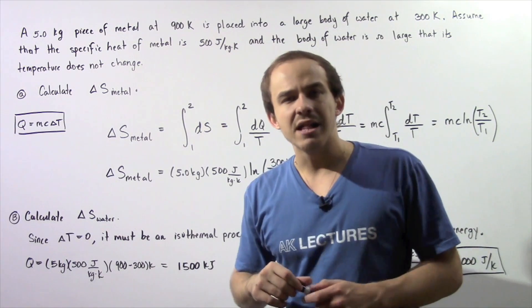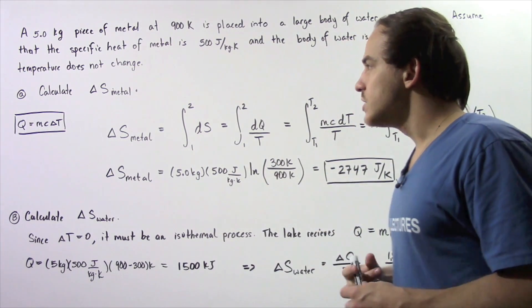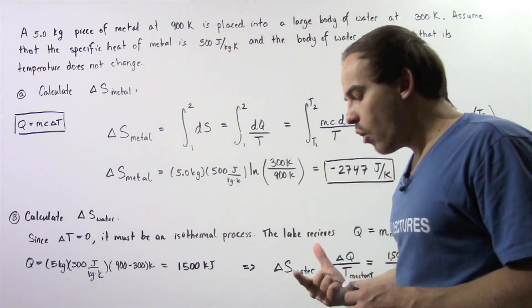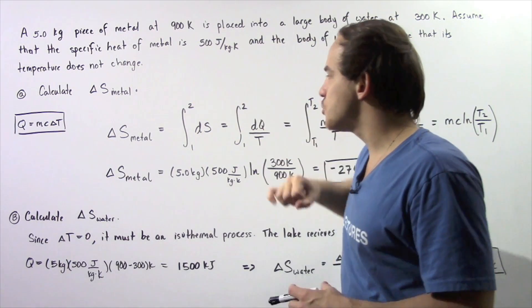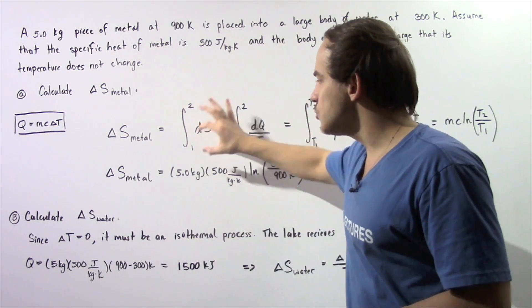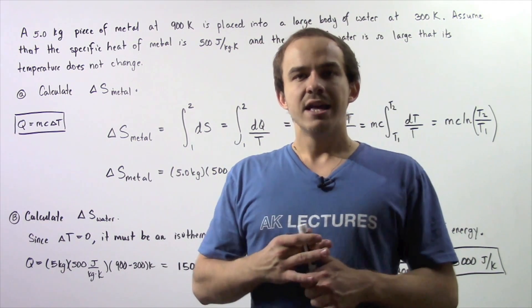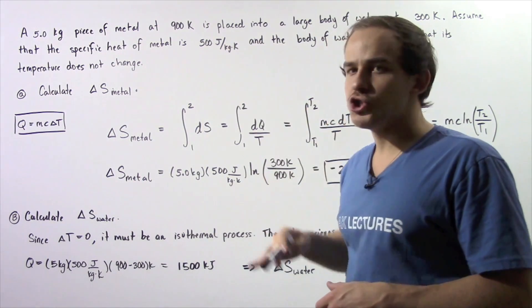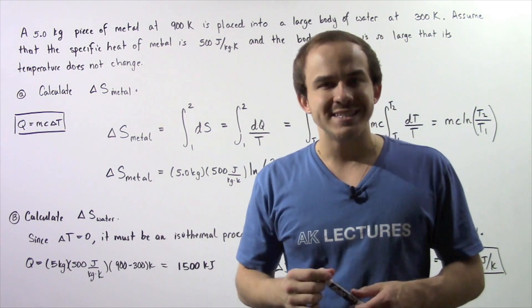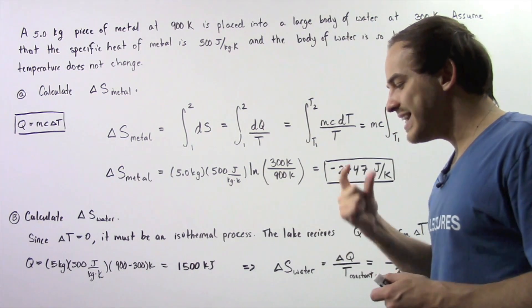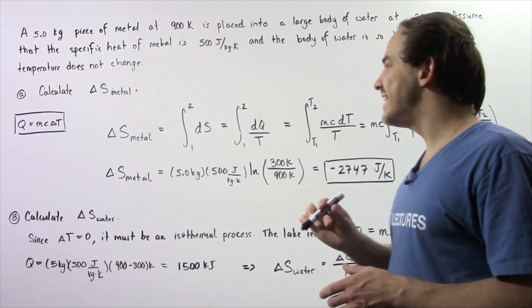In part B, we're going to calculate the change in entropy of the surroundings — the surrounding water. Now, the change in entropy of the metal is equal to the integral of the infinitely small change in entropy from our initial state to our final state. Because the temperature of the metal does not remain constant, the infinitely small change in entropy equals dQ divided by T — an infinitely small transfer of energy out of our metal, divided by the temperature in Kelvin.